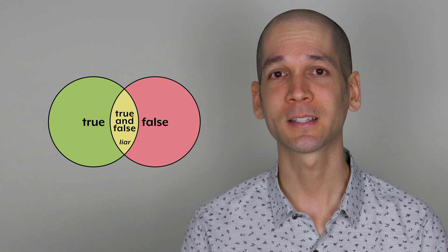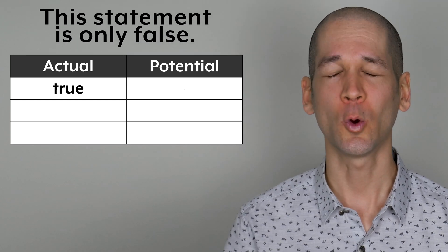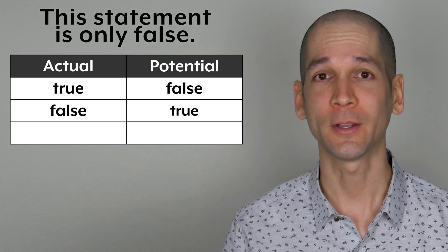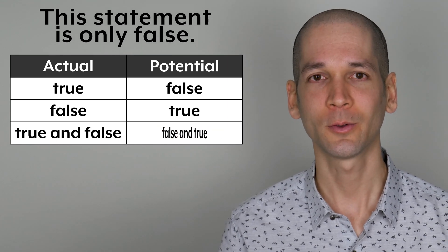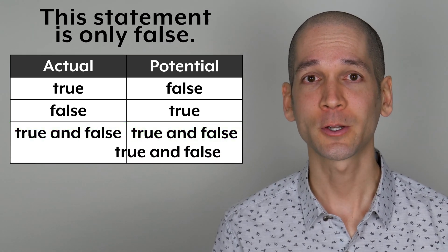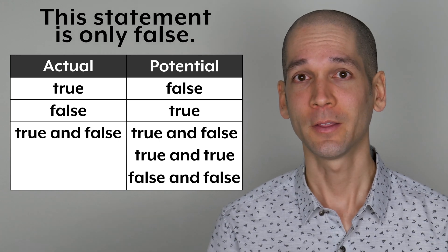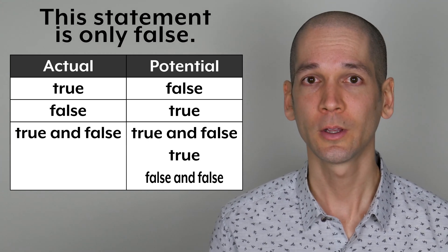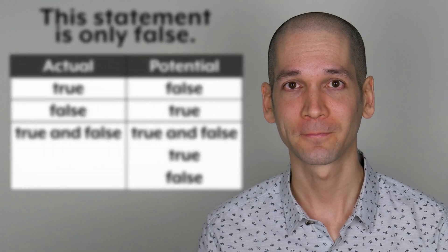But some critics argue that para-consistent logic is susceptible to a different liar statement: "This statement is only false." If it's actually true, then it can only be false. If it's actually false, then it can only be true. And if it's true and false, then it can be false and true, which is equivalent to true and false. From this perspective, the actual and the potential agree. But there is another perspective — perhaps the potential should also include true, and true-and-false, and false. In which case the complete potential is true and false and true and false, and with this perspective the actual and the potential disagree, so it's a contradiction. Since there are different perspectives, it's unclear whether there really is a contradiction. Some argue that para-consistent logic can overcome this strengthened paradox.